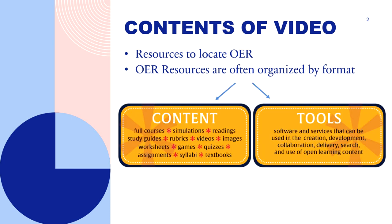What I mean by that — if you'll notice these two boxes here, there's one called content and one called tools. OER resources are organized by content, so for example, textbooks, images, worksheets, and assignments may be available in different types of tools. Tools might include software and services that can be used in the creation, development, collaboration, delivery, search, and use of open learning content. I'm going to be covering a few tools that you can use to find different kinds of OER content.